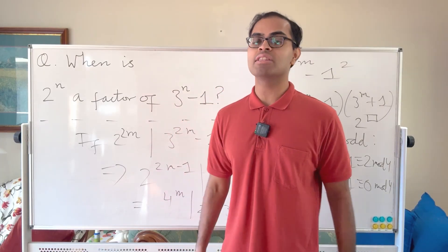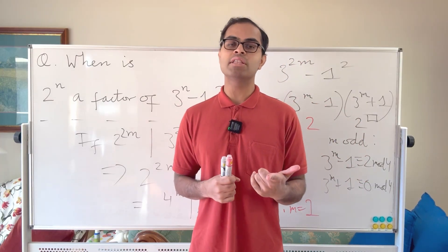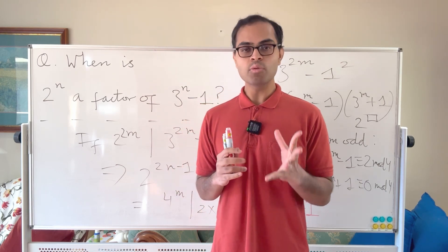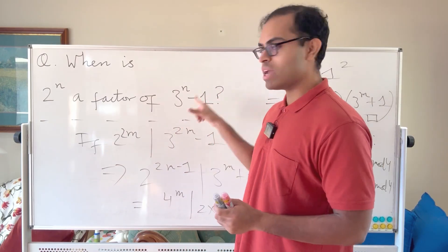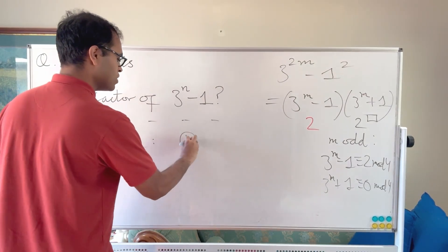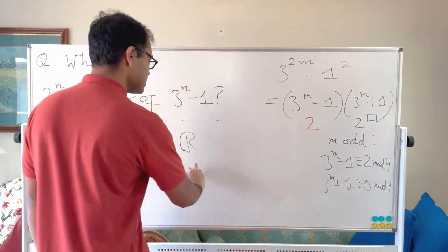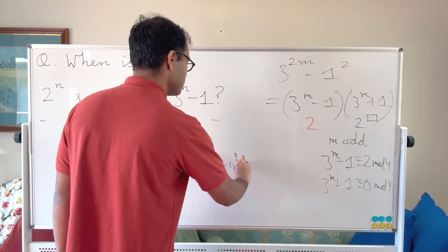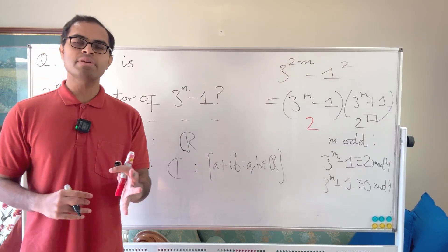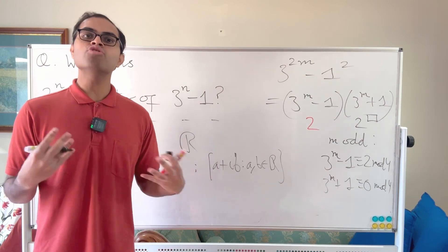The revolutionary piece of mathematics I promised: n equals 1, 2, and 4 are the only dimensions of number systems — rigorously called real division algebras. In dimension 1 we have the real numbers. In dimension 2 we have the complex numbers: all numbers of the form a + ib where a and b are real, forming a two-dimensional division algebra over the reals.